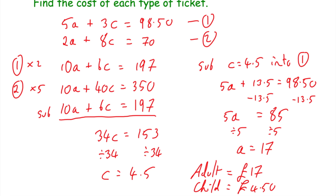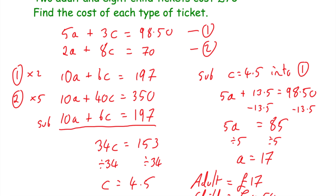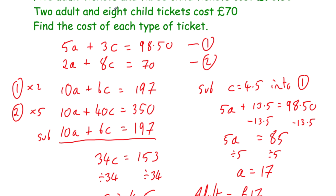You can check that: 2 adult tickets is £34, and 8 child tickets is 8 × £4.50 = £36. £34 + £36 = £70, which matches — so we've got it right.